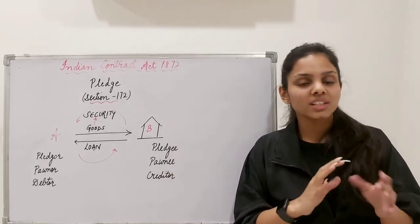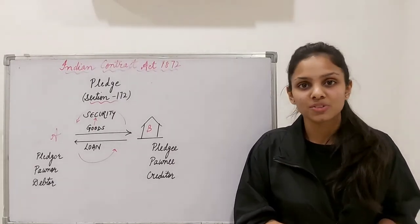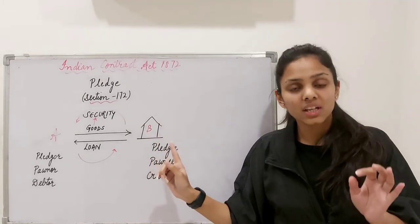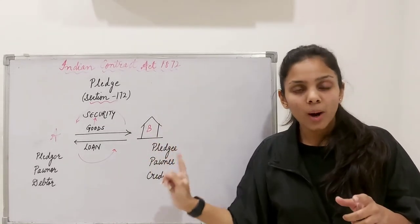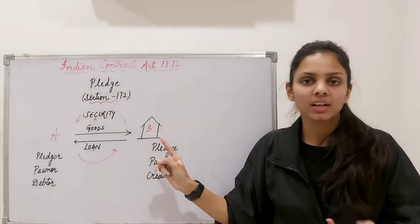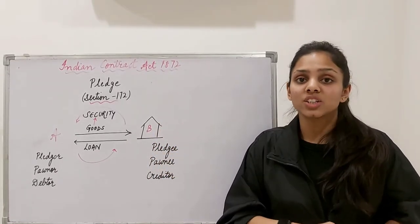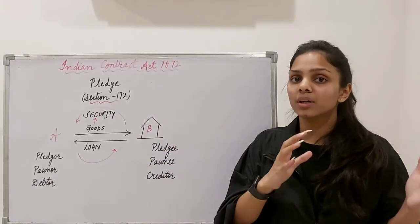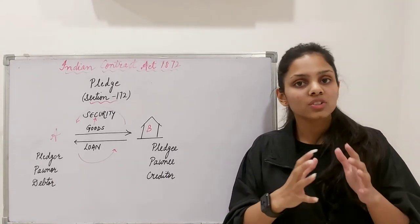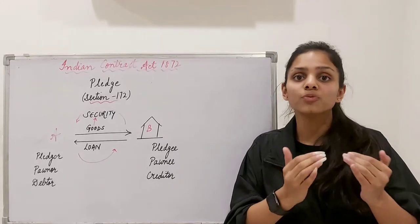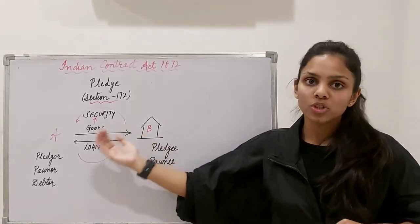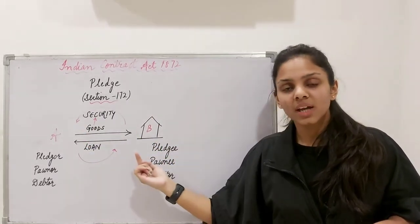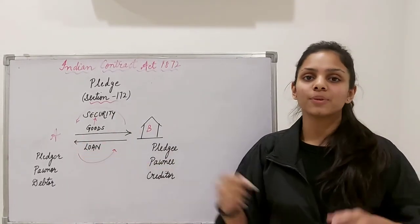Consideration is nothing but quid pro quo — something in return. If you need a loan, in exchange for the loan, you have to keep some goods as a security — some movable property, for example jewellery — with a banking institution or a person like a money lender. That is quid pro quo, something in return — promise for a promise. You give me the loan, I give you my goods as security. As soon as you repay the loan, the bank will return your goods which have been kept as security.